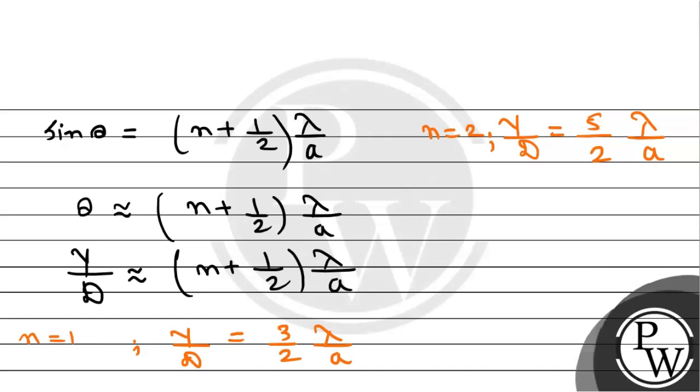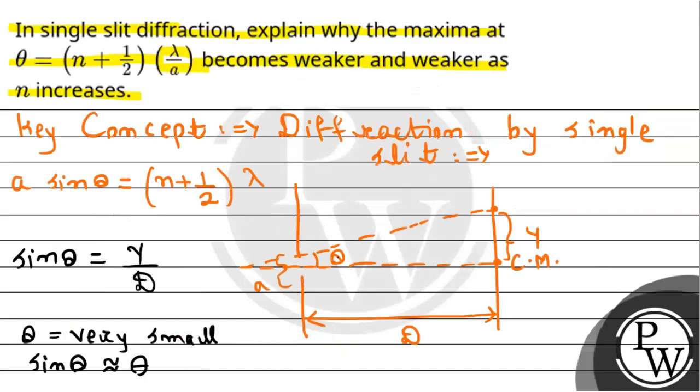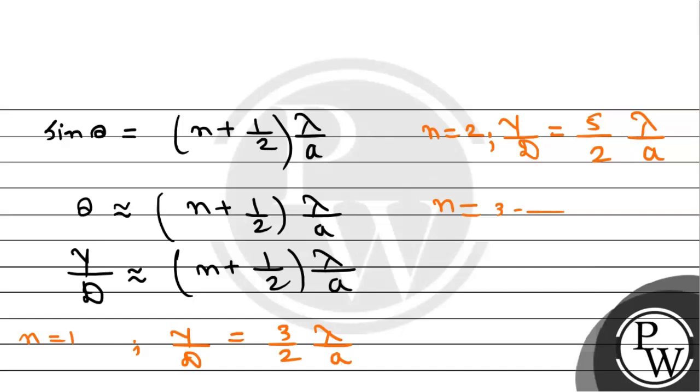In the same way, as we are increasing the value of n, you can clearly see the part of slit contributing to the maximum is decreasing here. Because you can see that y divided by D, this section is nothing but the part of slit which is contributing to the maximum, and it's nothing but decreasing here as we are increasing the value of n. And that is why, definitely, we can say that...